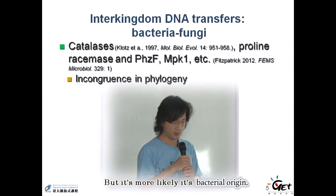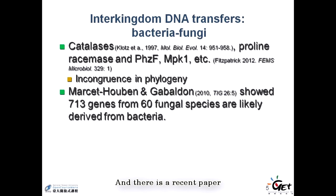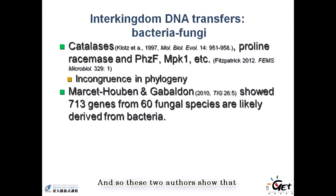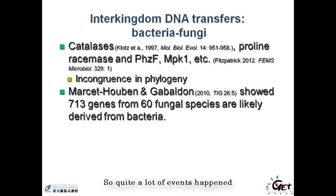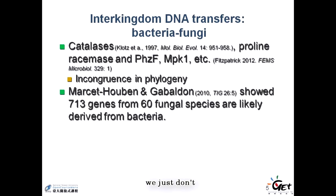In some cases massive loss is still possible, but it's more likely the gene is of bacterial origin. There is a recent paper published in Current Genetics in 2010 where the authors show that there are more than 700 genes in fungi that have bacterial origin. So quite a lot of HGT events happen between bacteria and fungi, and as the authors claim, there should be many more cases in nature that we just haven't looked at in detail before.